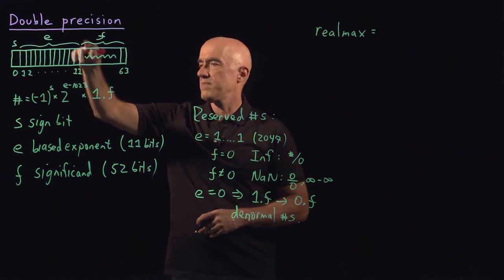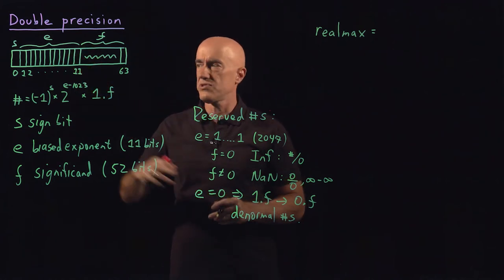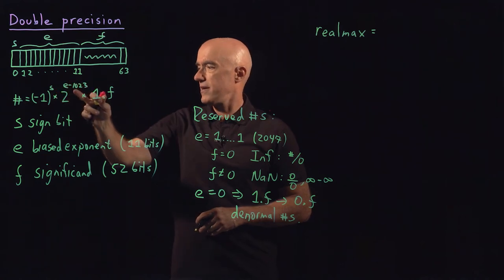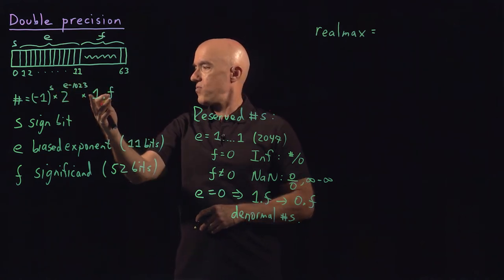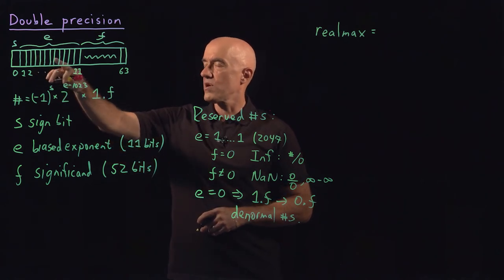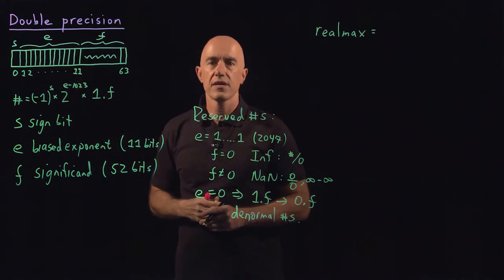So the first 10 bits are ones, and then the last bit is a zero because we've reserved all ones. So E is almost all ones. That would be 2046. Almost all ones, 2046.